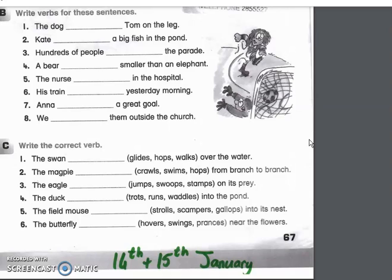The magpie — crawls, swims, or hops — from branch to branch. The eagle — jumps, swoops, or stamps — on its prey. The duck — trots, runs, or waddles — into the pond. The field mouse — strolls, scampers, or gallops — into its nest. And the butterfly — hovers, swings, or prances — near the flowers.